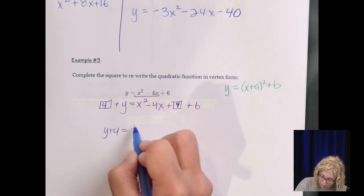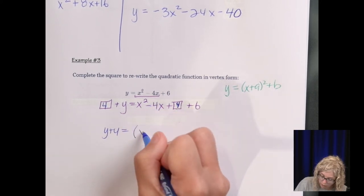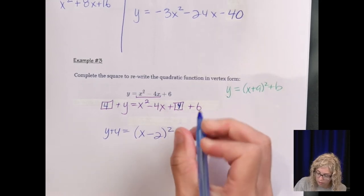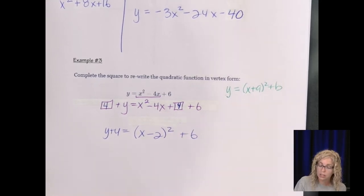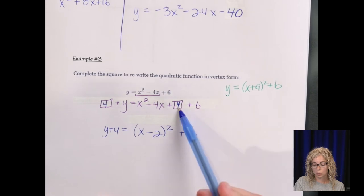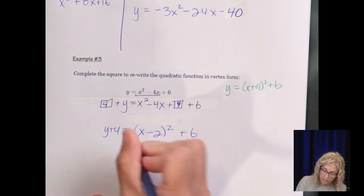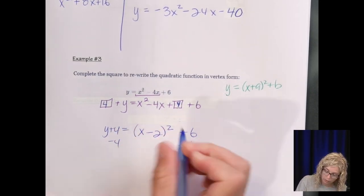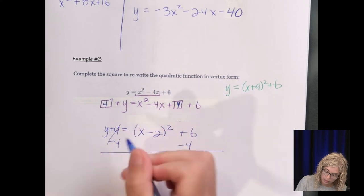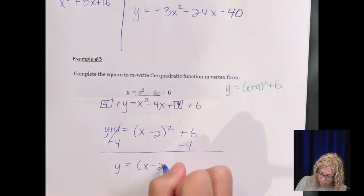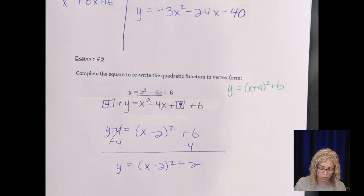So therefore, we get a Y plus 4 equals... I'm going to rewrite this as the square. X minus 2 squared plus 6. Because remember, 2 times 2 is 4, 2 plus 2 is 4. And then subtract the 4. So we get Y equals X minus 2 squared plus 2.